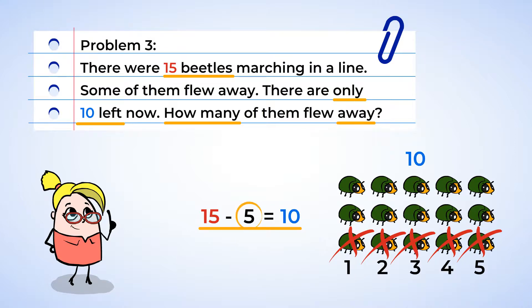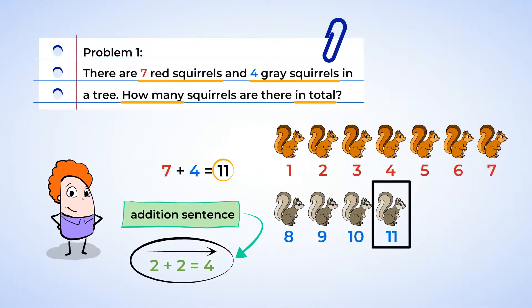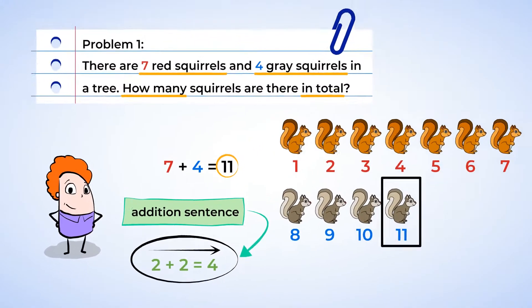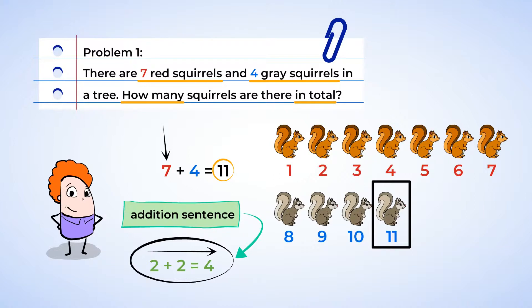We did it. We made another subtraction sentence. Let's review what we learned today on our math field trip in the forest. When putting two numbers together, like the seven red squirrels and the four gray squirrels, we can represent this with an addition sentence. We write the number of the first group, the number of the second group, an equal sign, and the number of both groups together.